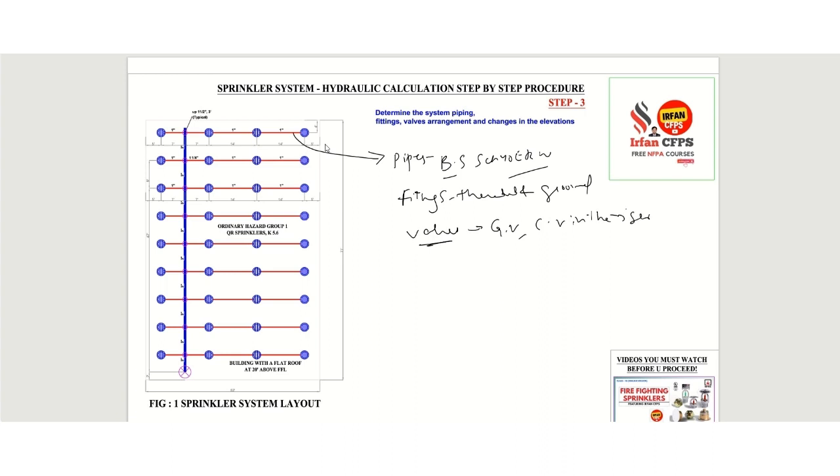This has been already explained in Step 1. So apart from these details we have to know the installation height of the branch line. Since the height of the roof is 20 feet here in our case, we will consider the branch lines are installed at 19 feet. This is only for our understanding.